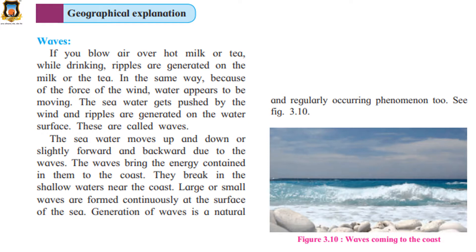So what are the factors? First, the gravitational pull of the moon and the sun as well as that of the earth. Then, the revolution of the earth around the sun and the indirect revolution of the moon around the sun. Then, the centrifugal force generated due to rotation of the earth. These are the factors responsible for the occurrence of tides.